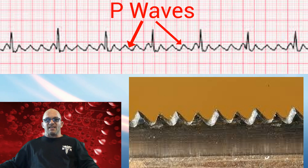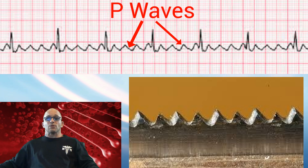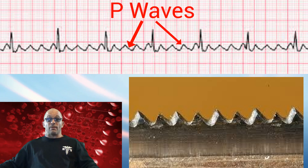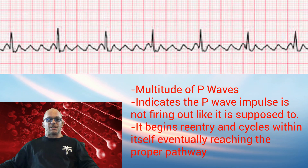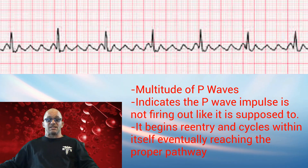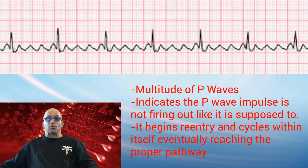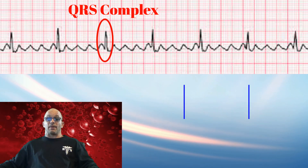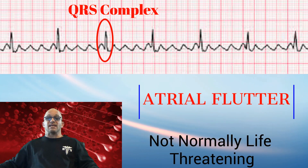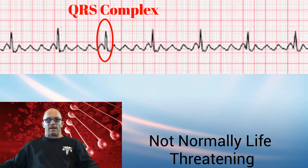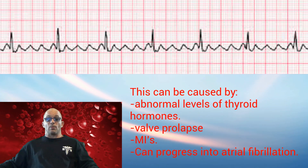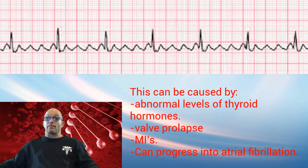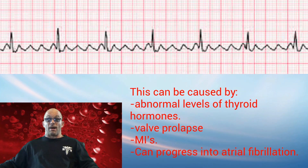Now we will review this rhythm. As you can see, it shows sawtooth structures that are supposed to be P waves. The multitude of these structures indicates the P wave impulse is not firing out like it is supposed to. It begins re-entry and cycles within itself, eventually reaching the proper pathway, which is indicated by the QRS complex. This is indicative of atrial flutter, which is not normally life-threatening. This can be caused by abnormal levels of thyroid hormones, valve prolapse, or MIs. It can progress into atrial fibrillation.